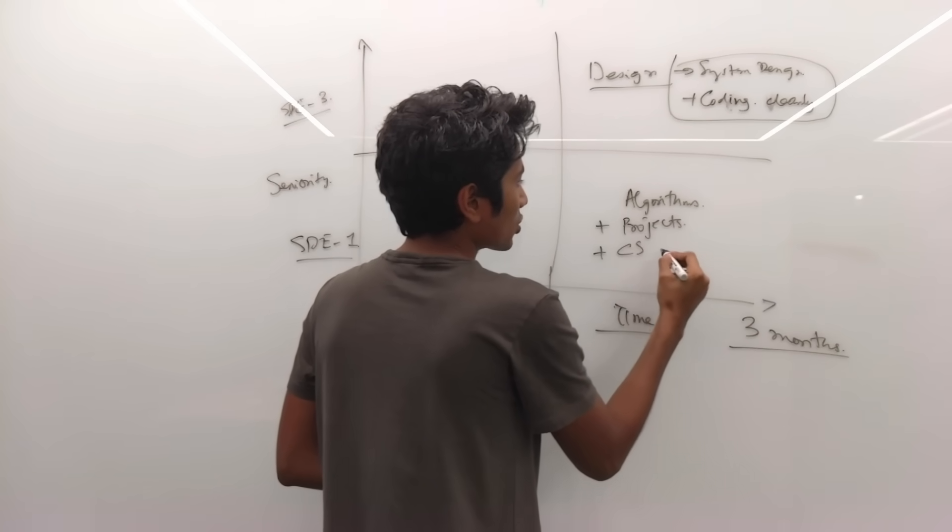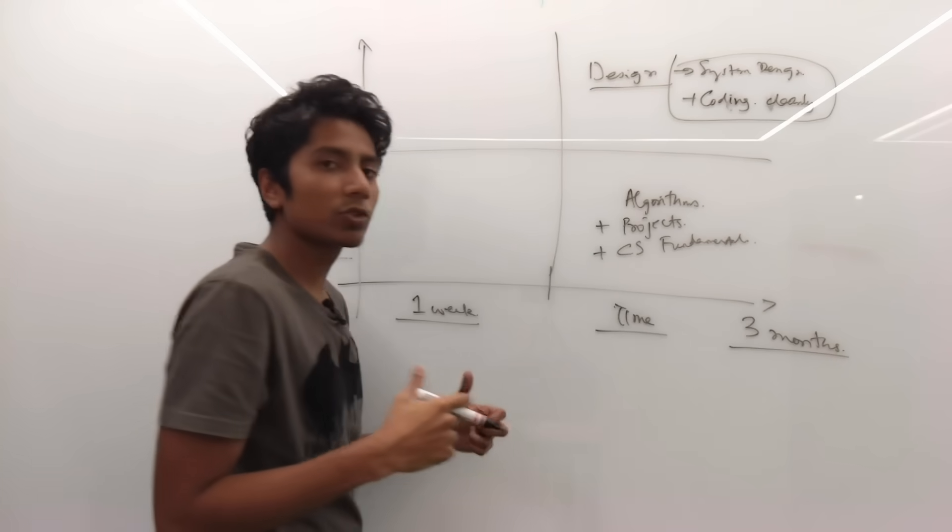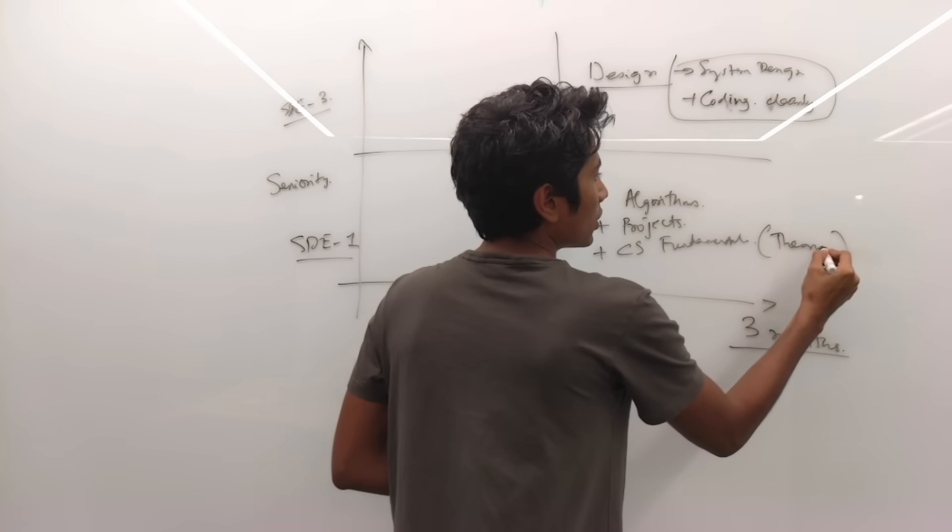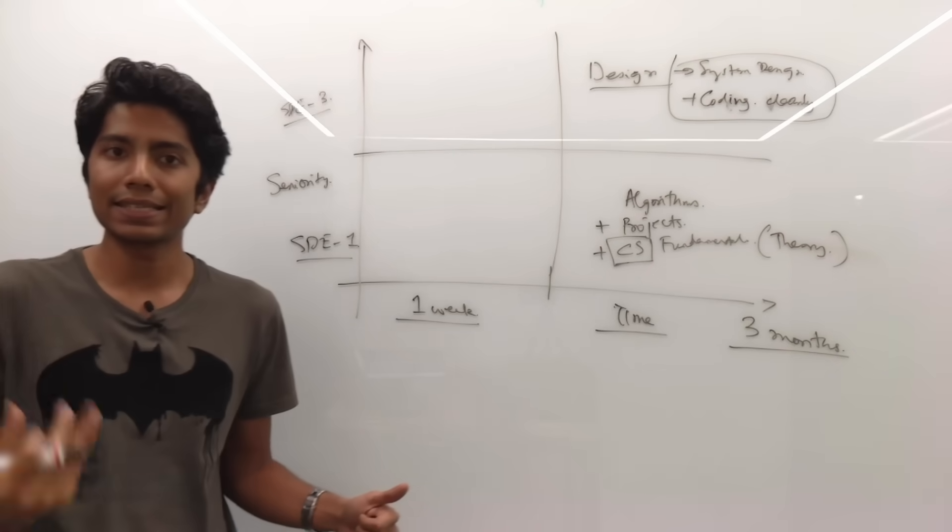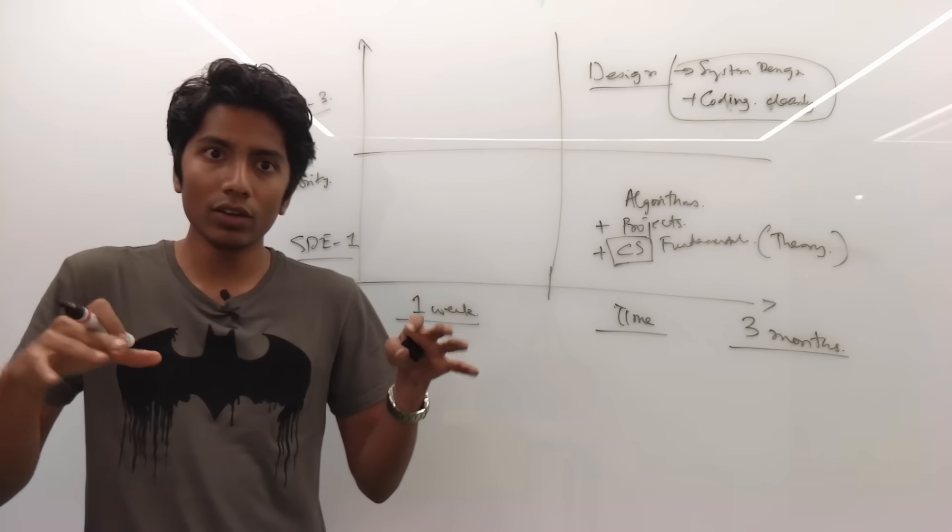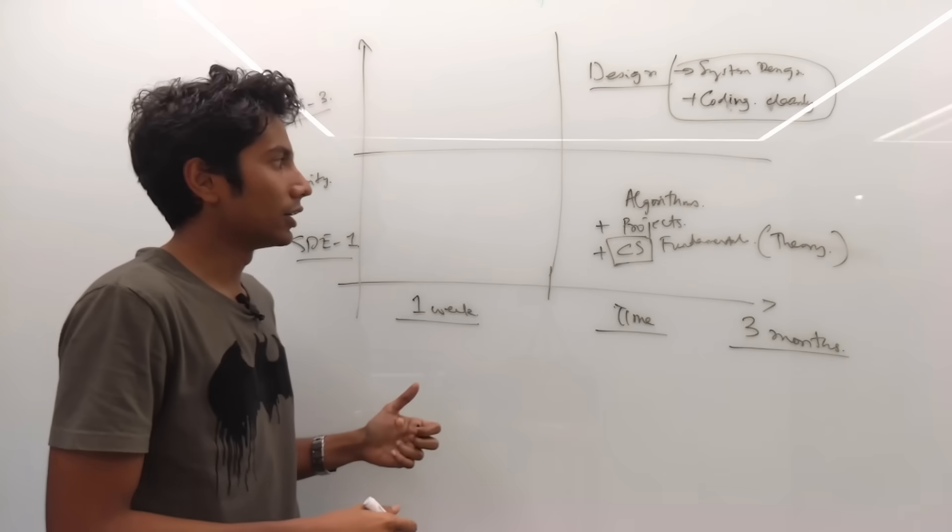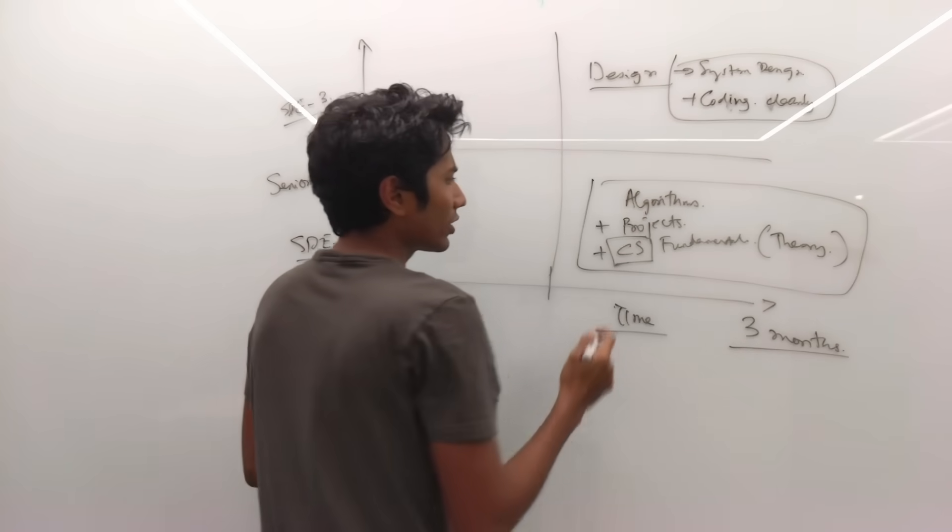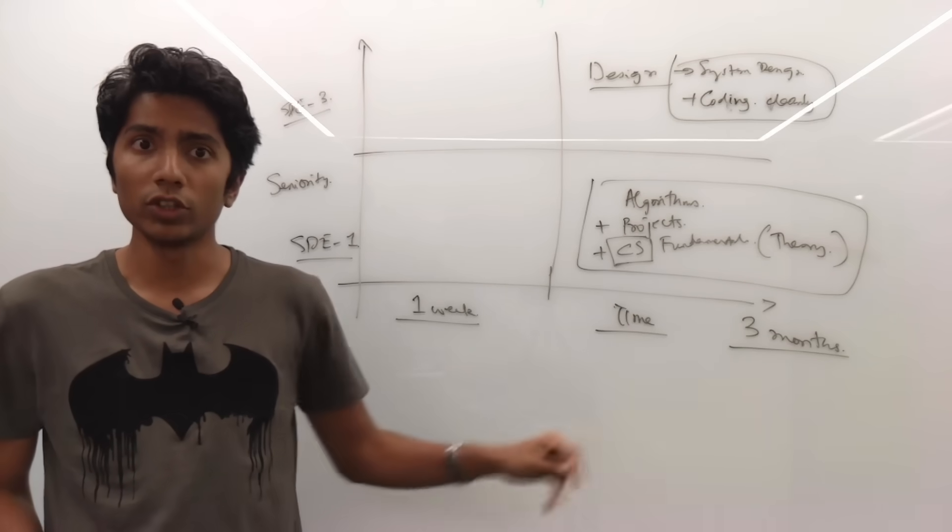And the third thing, I'm just going to mention it as CS fundamentals, but it's not so much fundamentals. It's better that you know them in depth. So the theory of computer science, whether it's databases, networks, you should understand at a higher level why something happens. Like, why do you have a cache? And so on and so forth. So these three things are things that you can focus on if you have a lot of time and you're looking for an entry level job into software engineering.